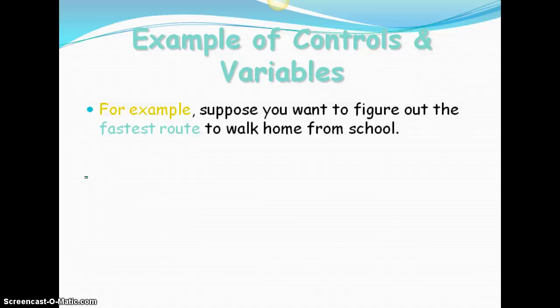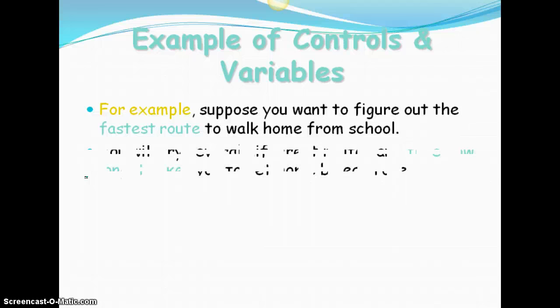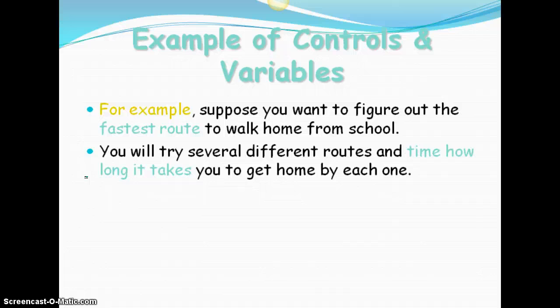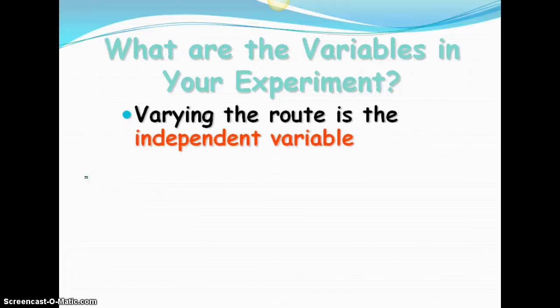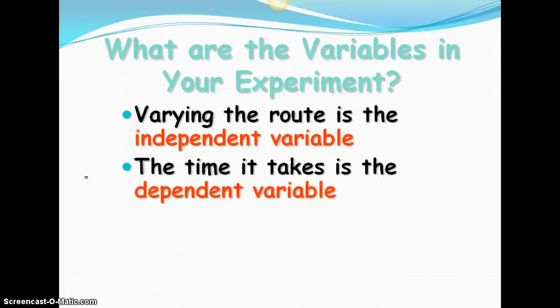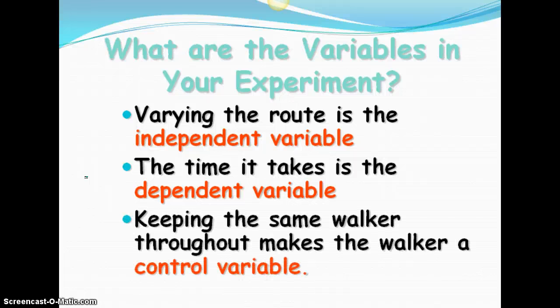So some examples, for example, suppose you want to figure out the fastest route to walk home from school. You'll try several different routes and time how long it takes to get home by each one. Since you are only interested in finding a route that is fastest for you, you will do the walking yourself. So the variables in this experiment: varying the routes is going to be your independent variable. That's what you change each time you go out. The time it takes is what you're measuring. So that's the dependent variable. And keeping the same person walking each time is the control variable.